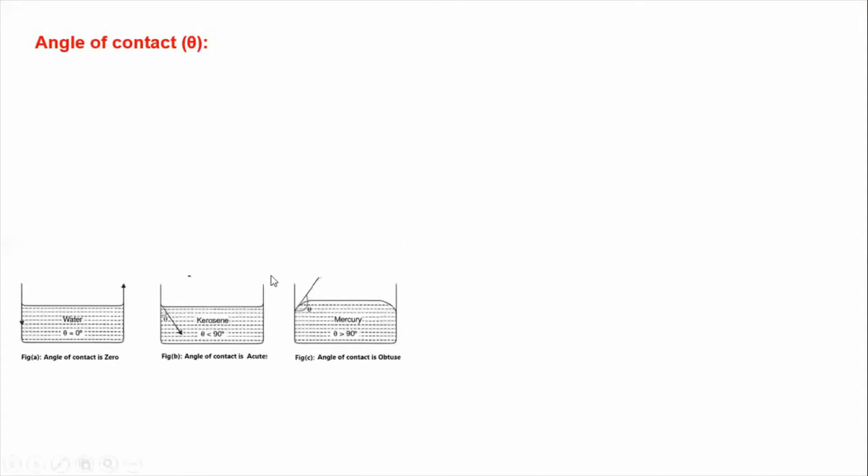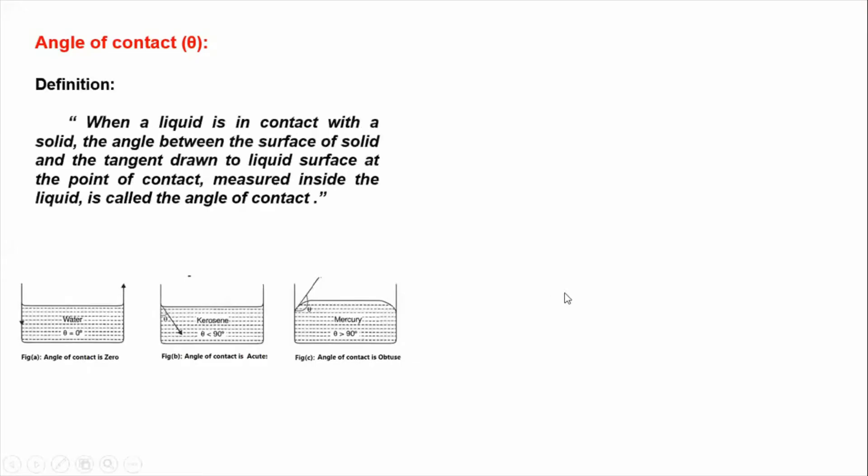To the curve surface of liquid at point of contact is the angle of contact. It is the angle between these two - you can see this solid surface and this is the curve surface at that point. If you draw a tangent, then the angle between these two is called as angle of contact.